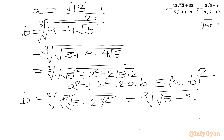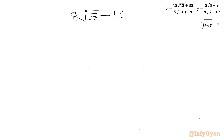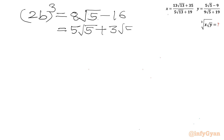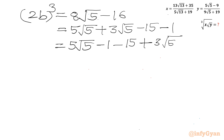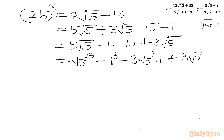Left hand side is b. Consider cubing both sides: b³ = √5 − 2. Now I will multiply both sides by 8: (2b)³ = 8√5 − 16. Now I can split 8 as 5 plus 3, so 5√5 + 3√5, and 16 as 15 plus 1. After rearrangement: 5√5 − 1 − 15 + 3√5. Now 5√5 is (√5)³.